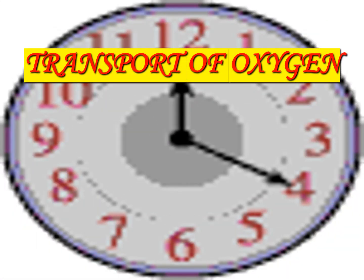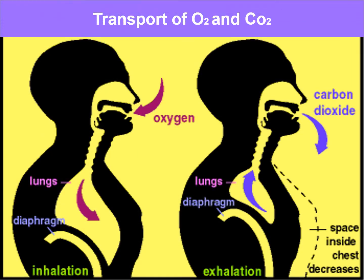Good morning students. Hope everyone is safe at home. Today's topic is transport of oxygen. First, we have to know that transport of oxygen from the lungs to the tissues occurs due to constant circulation of blood and diffusion of oxygen. The transfer of oxygen across the alveolo-capillary membrane requires an efficient carrier system to transport it to the tissues for use in cellular respiration.